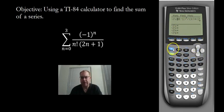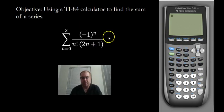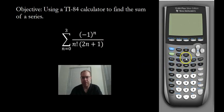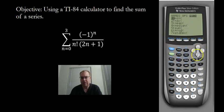All right, so we're going to quit out of this — go to Second Mode, that will allow you to quit. Now we're going to do the sum of this. So you're going to go to Second STAT, and then scroll over to Math, and then scroll down to option 5, which is the sum.